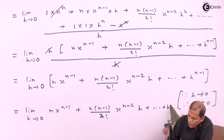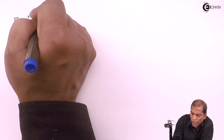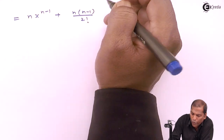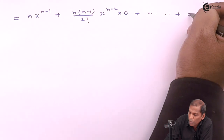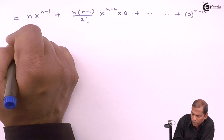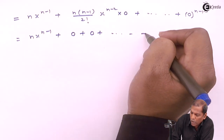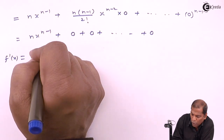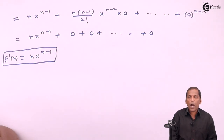The next step: n·xⁿ⁻¹ + n(n−1)/2! · xⁿ⁻²·h + ... + hⁿ⁻¹. Now we substitute the limit h → 0, so all terms containing h become zero, giving f'(x) = n·xⁿ⁻¹. So this is all about the derivative of the power function.